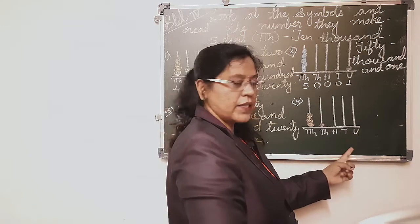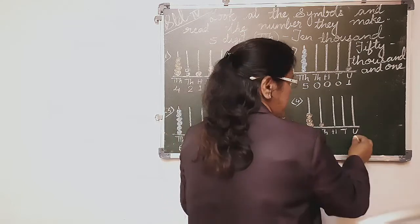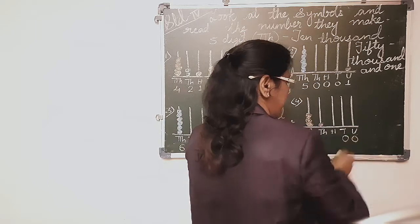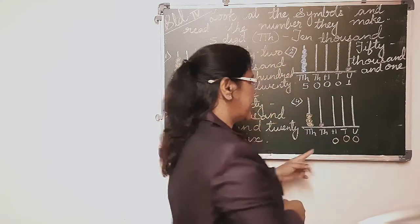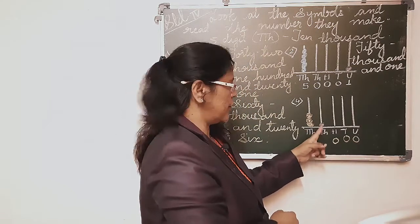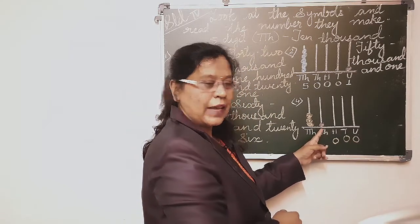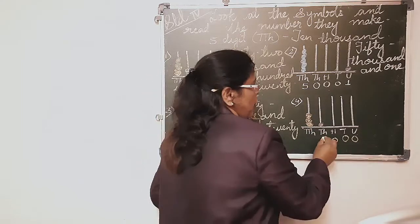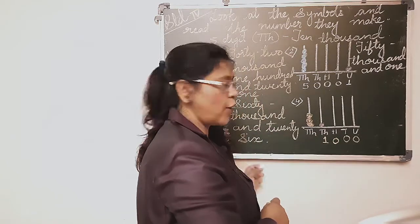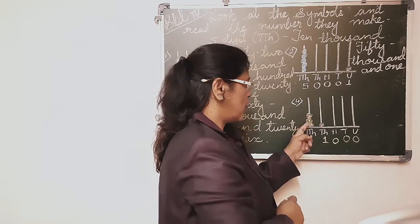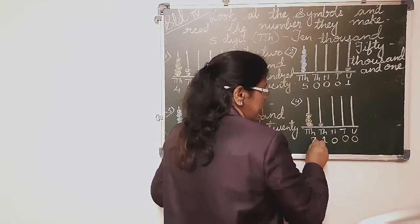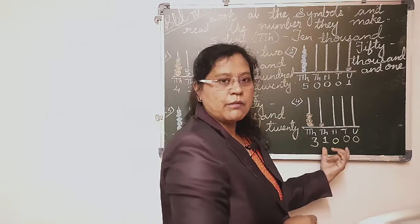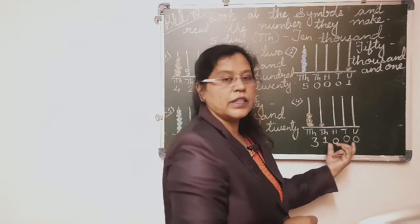Now the fourth one. Units place: no beads, so it is zero. Tens place: no beads. Hundreds place: no beads. Thousands place: one pink colored bead is there — so it is one. Ten thousands place, just count: one, two, three — three beads. So it is thirty-one thousand. The number represented here is 31,000.